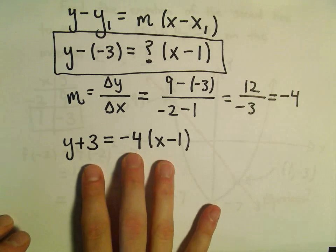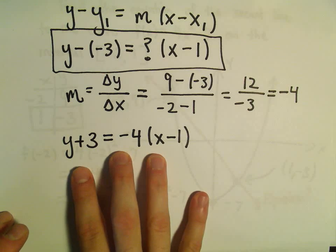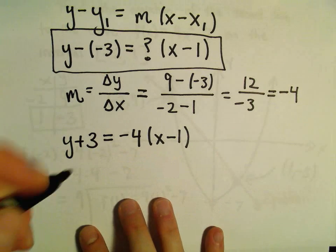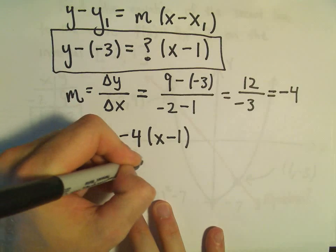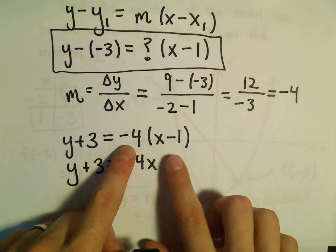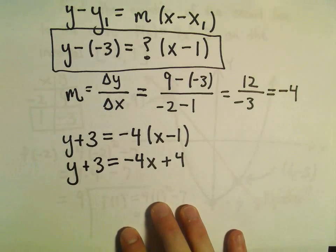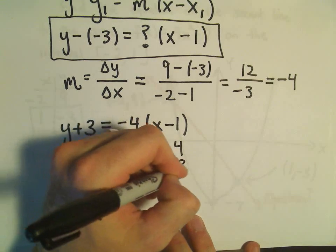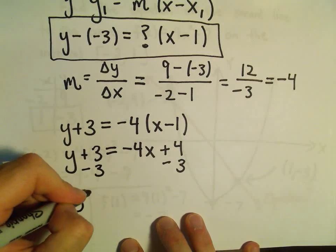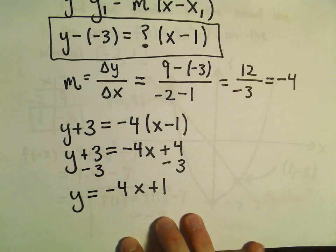Let's call it a day. A lot of times though people will want the solution in slope-intercept form. So let's go ahead and do that. If we distribute the -4, we'll get -4x. -4 times -1 would be positive 4. And to get the y all by himself there, we can just subtract 3 from both sides and that would give us y = -4x + 1.